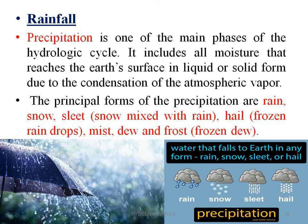The principal forms of precipitation are rain, snow, and sleet. Sleet means snow mixed with rain. Then mist, dew, frost, etc. These are the forms of precipitation.